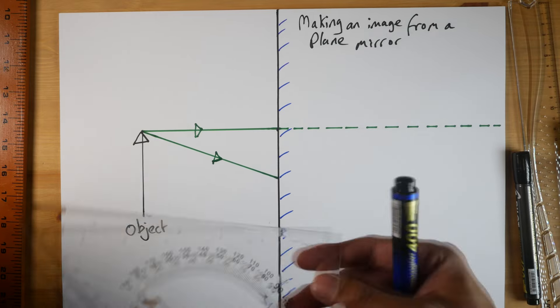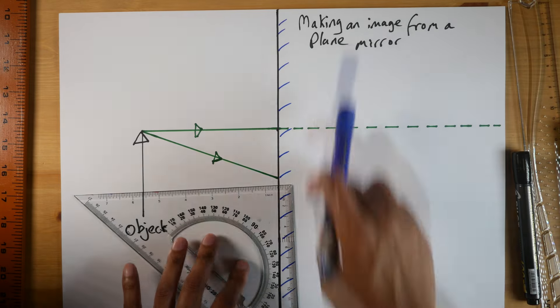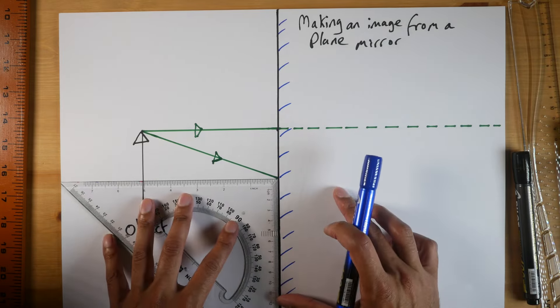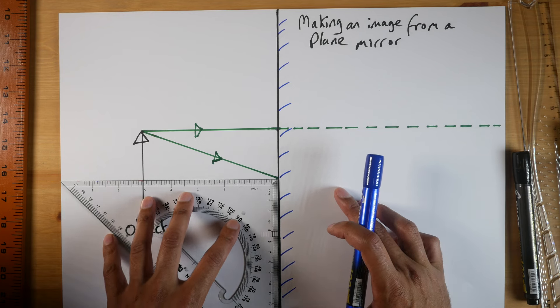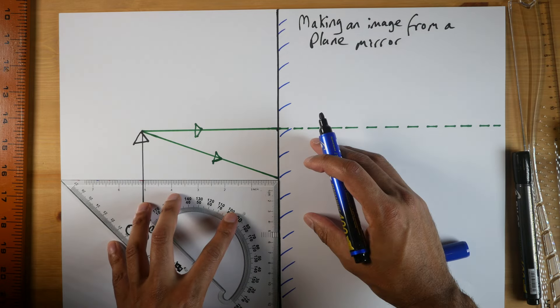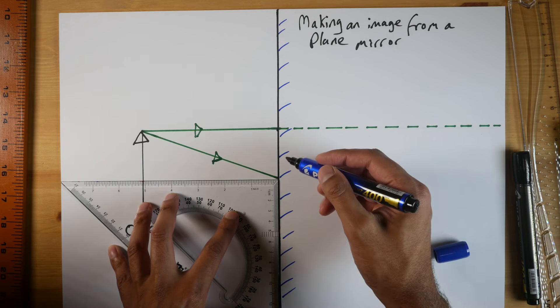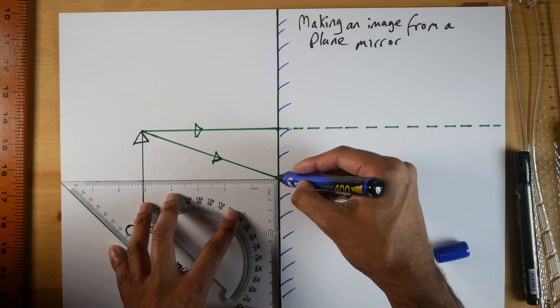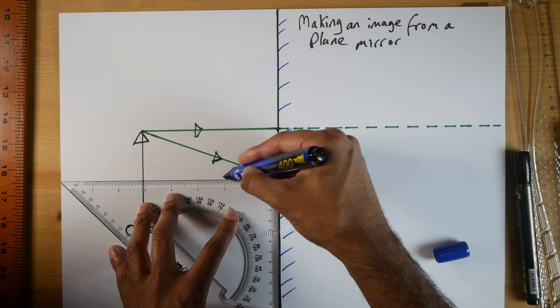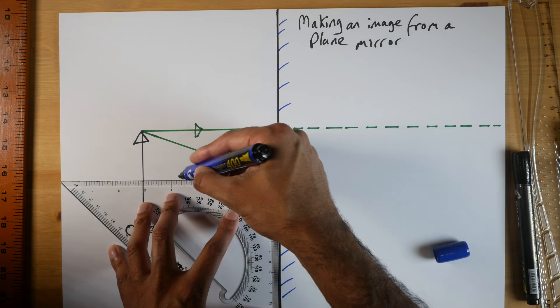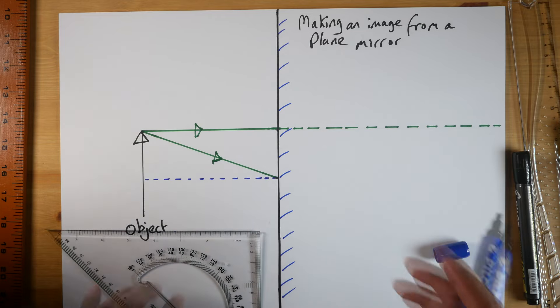And again, this normal line should be 90 degrees. It's slightly easier if you draw another parallel line here, but we'll just stick with this for now. And the more accurate you do it, the better. It's going to be a dotted line. Again, this line here, this normal line, doesn't actually exist.